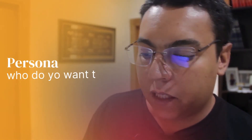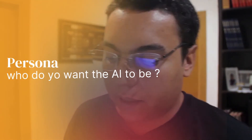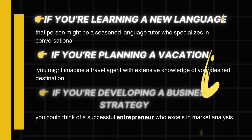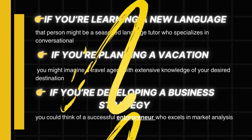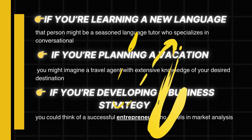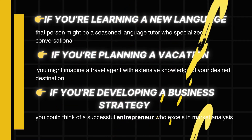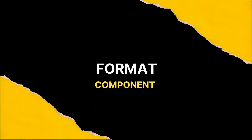The persona component refers to a specific character or expertise you want ChatGPT to embody. A useful tip is to envision someone you wish you had access to consult for that task. For instance, if learning a new language, that person might be a seasoned language tutor specializing in conversational skills. If planning a vacation, imagine a travel agent with extensive knowledge of your destination. If developing a business strategy, think of a successful entrepreneur who excels in market analysis.